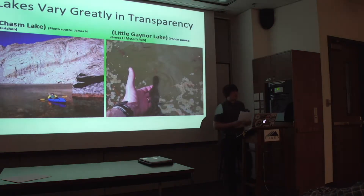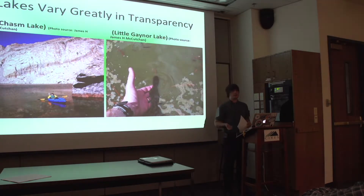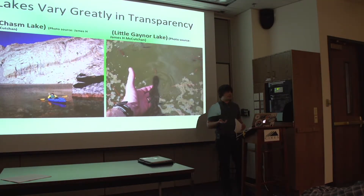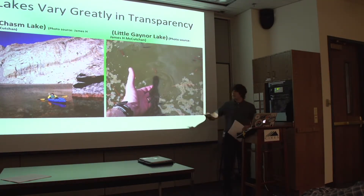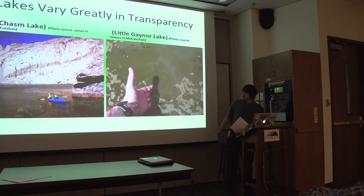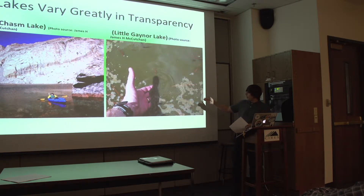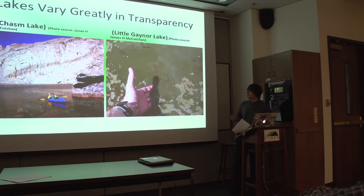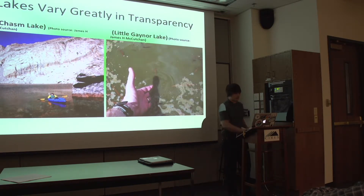There's a lot of variation in transparency in any type of lake system. On the left, you have a photo of Chasm Lake — you can see it's very clear, there's a lot of light transmission. And on the right, you have a photo of Littergainer Lake, and it has a lot of heavy suspended sediment particles that are blocking the light transmission. So this gives you an idea for the variation in transparency.